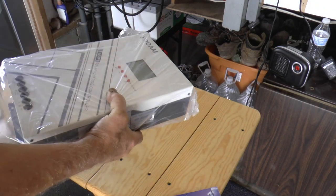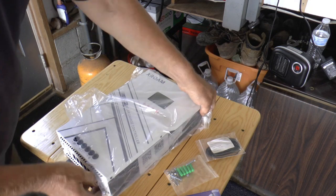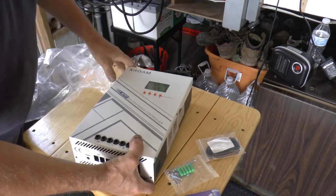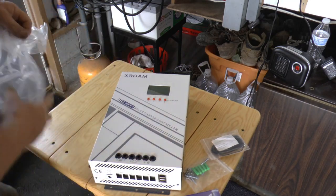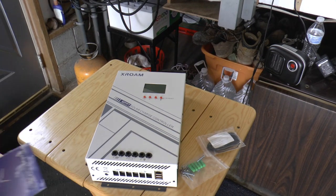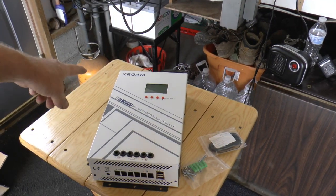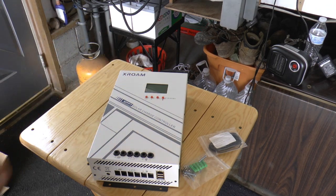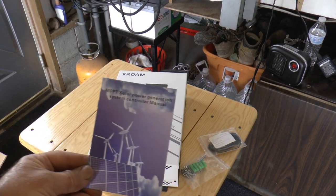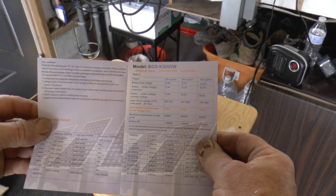So what we have is supposedly a 100 amp solar charge controller, MPPT. Xroom is the brand. This is the manual that comes with it, and it is awful.